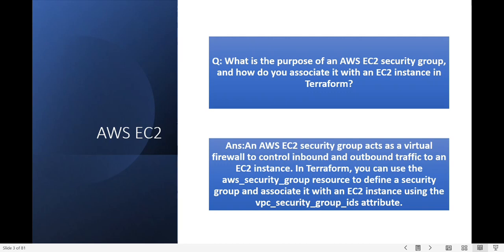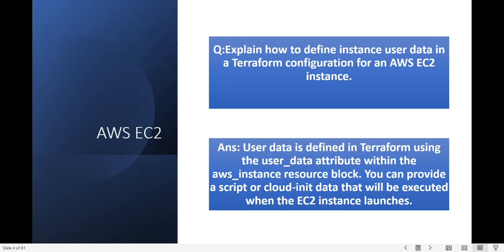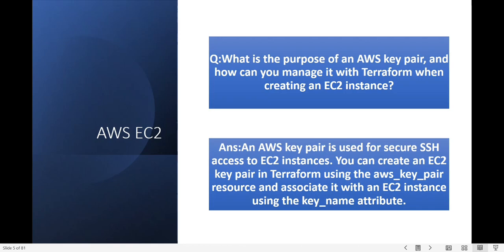You associate the security group using the vpc_security_group_ids attribute. Next question: explain how to define instance user data in Terraform. For AWS EC2 instances, user data is a set of instructions to execute while launching your EC2 instances. In Terraform you can use the user_data attribute within the AWS instance resource block to define the user data, or you can use the cloud-init option.